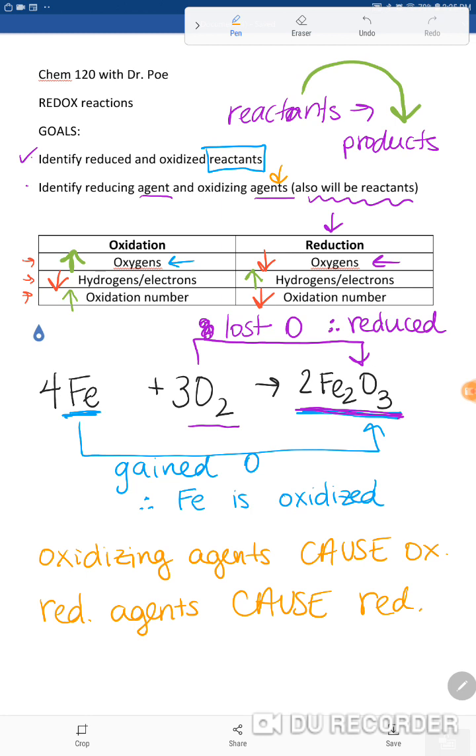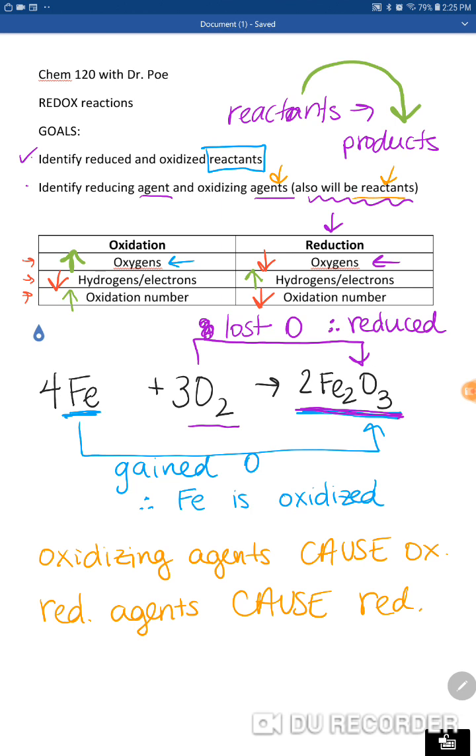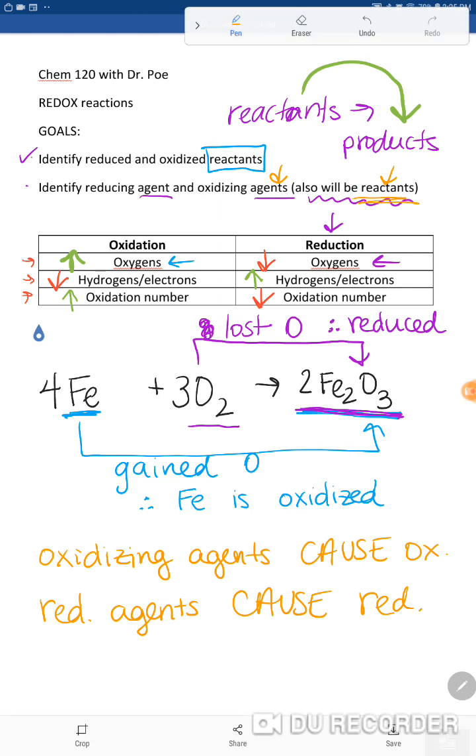So what you want to do here is use this opportunity to pause the video. In this reaction, iron combining with oxygen gas forming iron(III) oxide, go ahead and take a moment to figure out what's going to be the reducing agent and what's going to be the oxidizing agent. Remember these are still going to be reactants, so that should narrow it down for you. Go ahead, pause the video, and then after you have your answer hit resume.